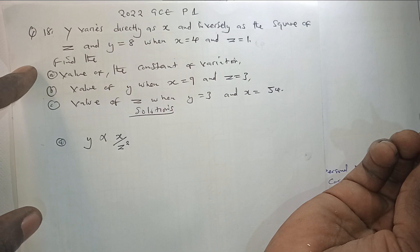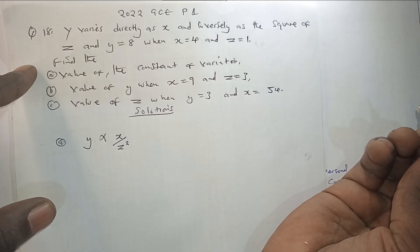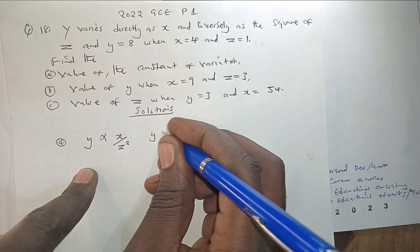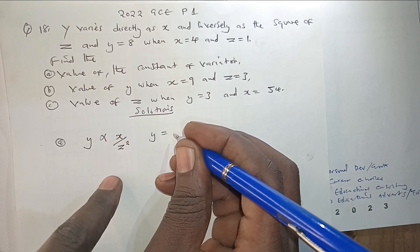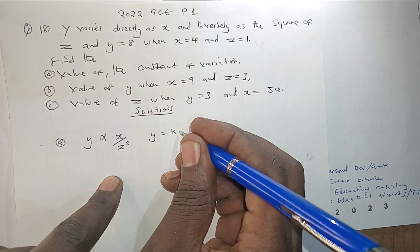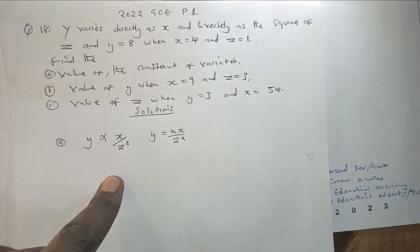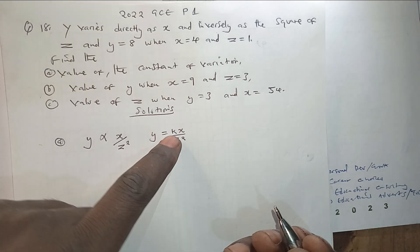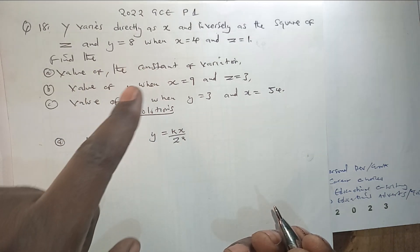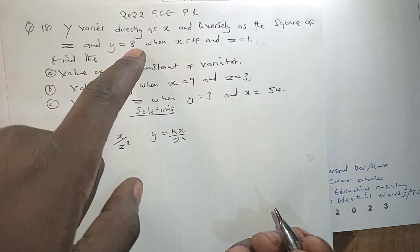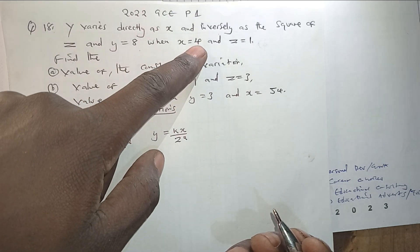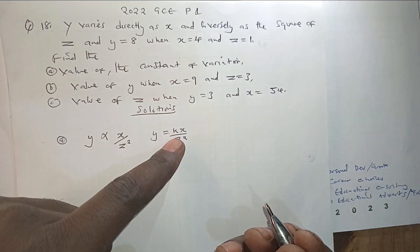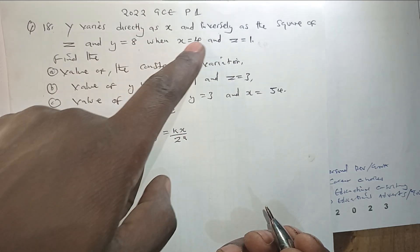And then next, we need to understand that there is a constant variation which is taking place in here. So this is now going to give us Y equals KX over Z power 2, which is for the constant variation. So this is what is going to be obtained. And then we can move on and find the value of K, because we've been told when Y equals 8, X equals 4, and Z equals positive 1. So to find the value of the constant variation meaning K, we are supposed to use these values for X, Y, and Z.